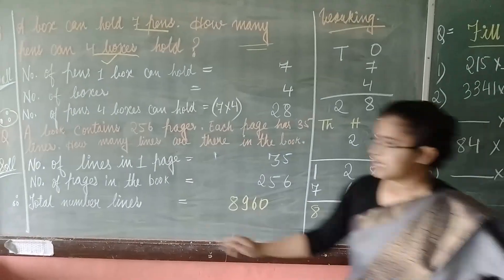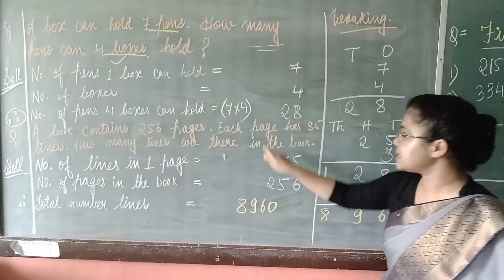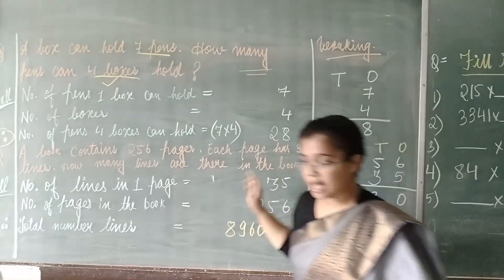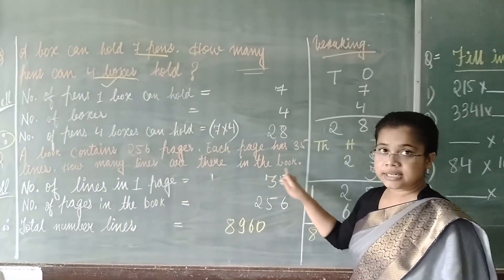Next question is, a book contains 256 pages. Each page has 35 lines. How many lines are there in the book?